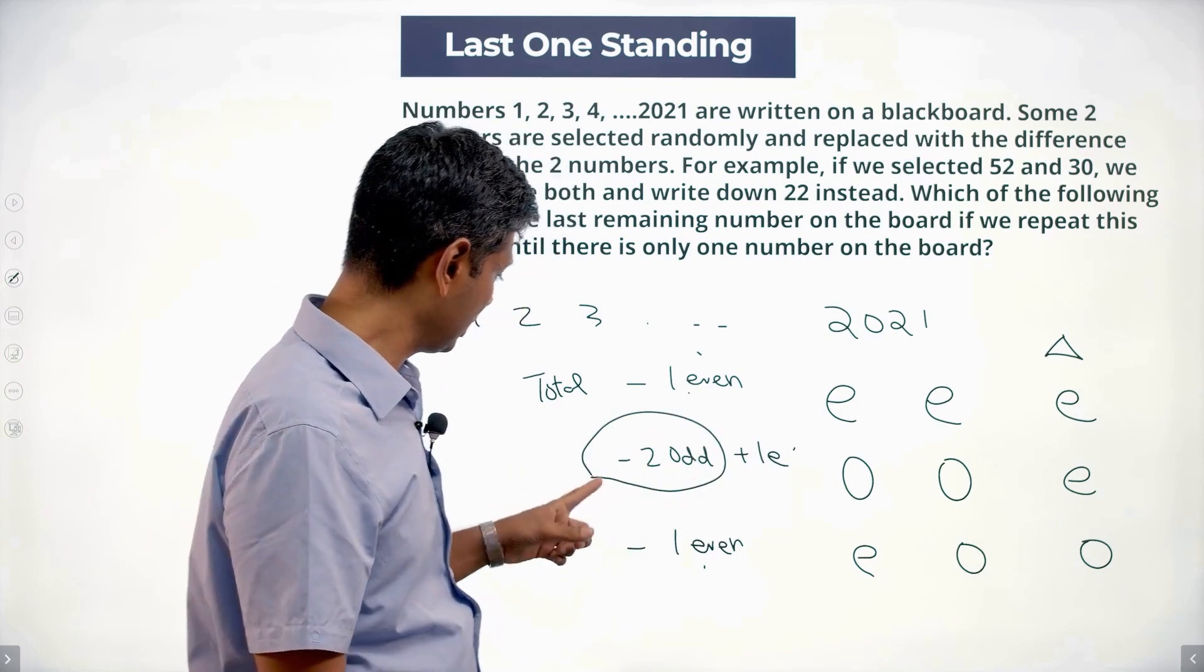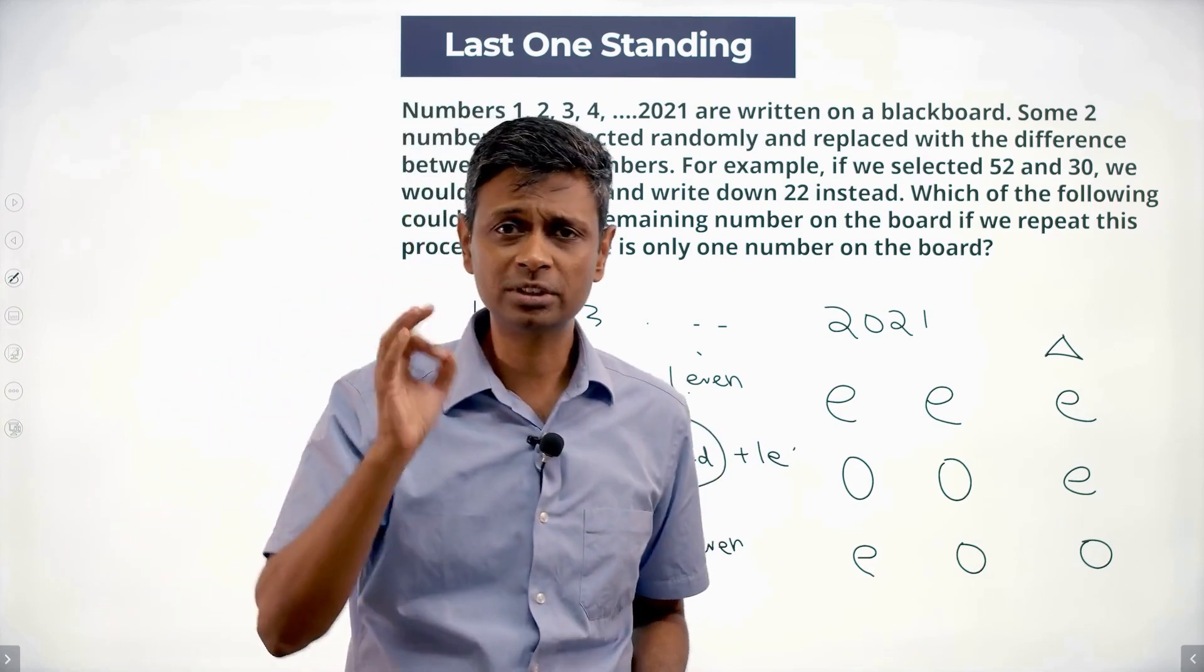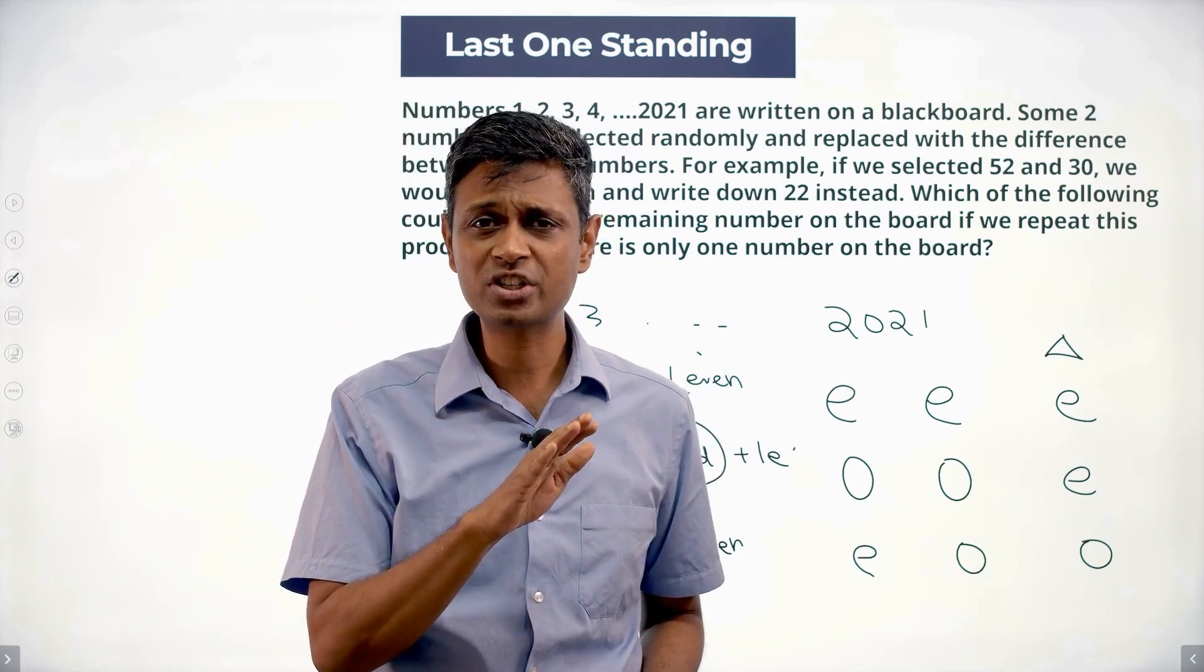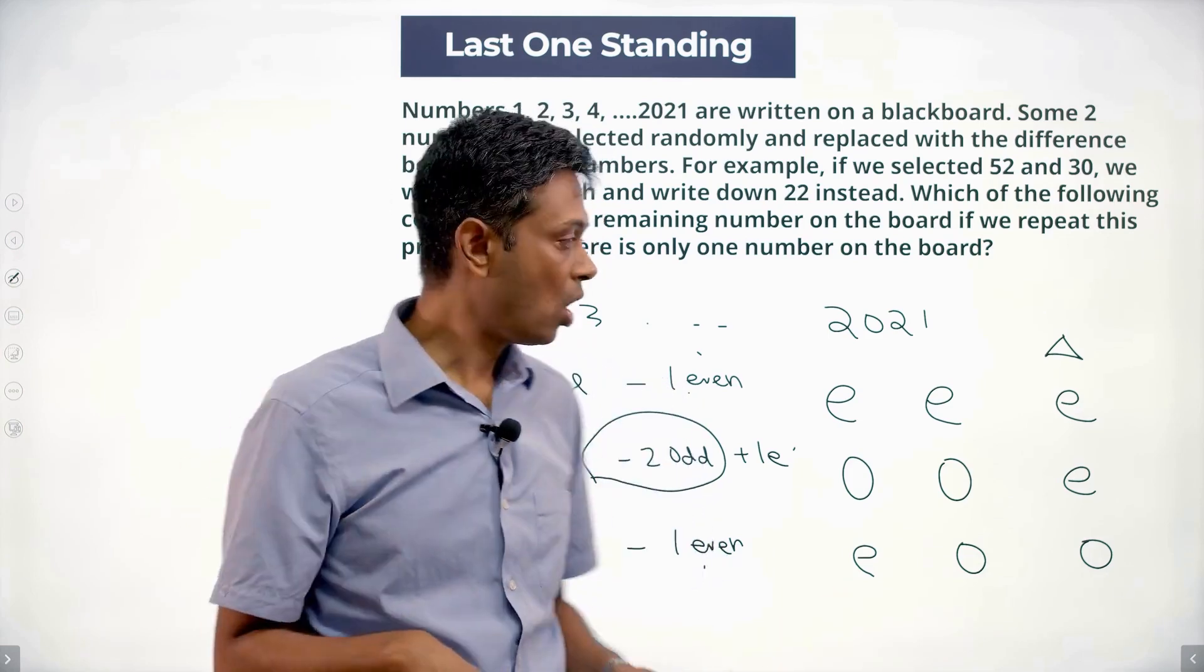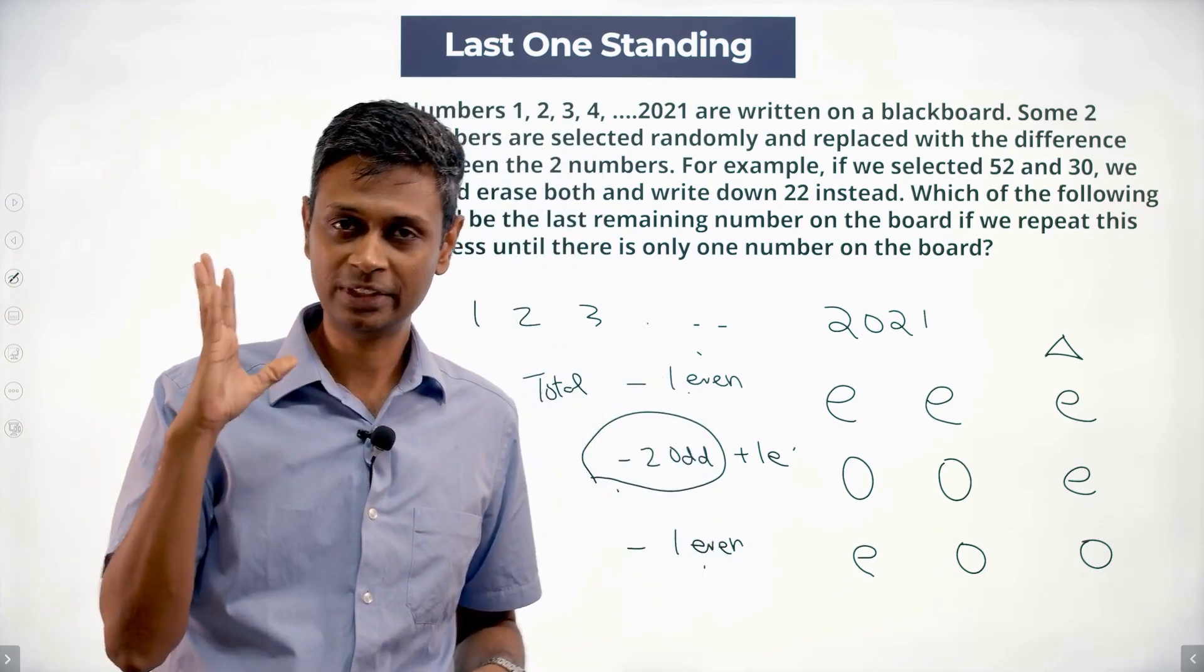Odd number. Either the number of odd numbers does not change at all - no change. Or it drops by two.